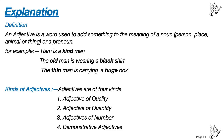Why have I written in bracket: person, place, animal or thing? Because a noun is the name of a person, place, animal or thing. Right? Or a pronoun. So an adjective is a word used to add something to the meaning of a noun.